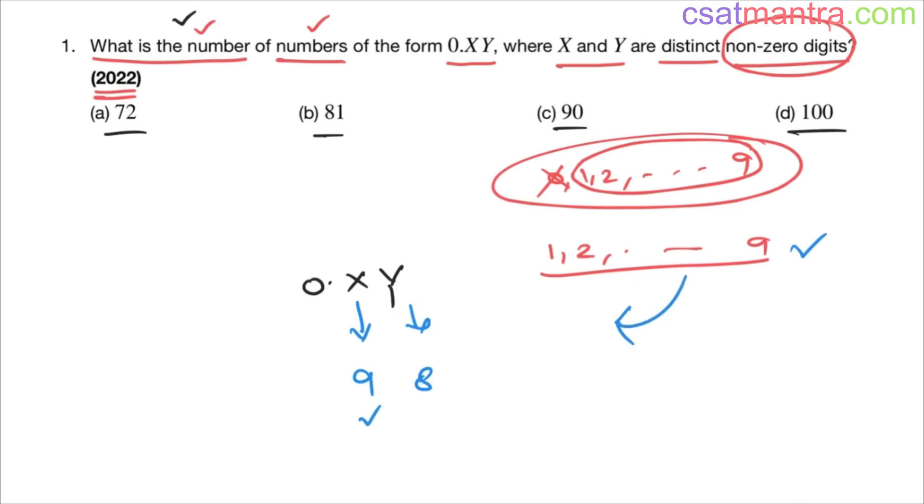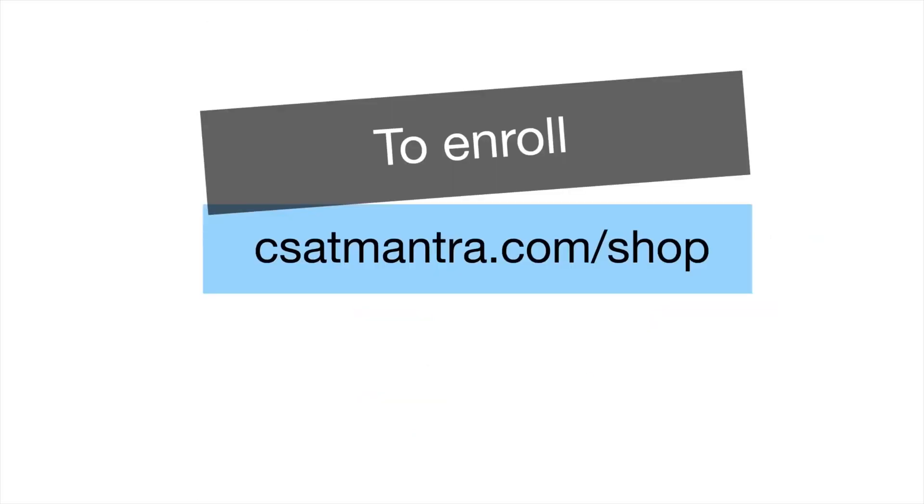When you use, let's say, two here, you cannot use two here. Remaining eight options, eight digits would be there. So X can be filled in nine ways and Y can be filled in eight ways. Nine into eight, 72. Answer is A.